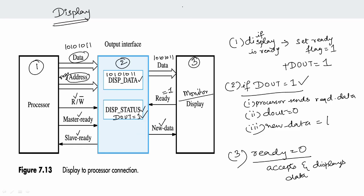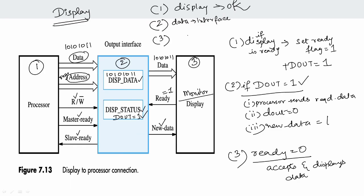To summarize: the first step is display is ready, the second step is processor checks display is OK, and the final step is the display consumes this data from the interface.